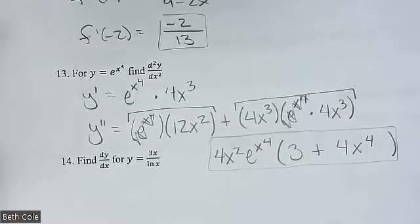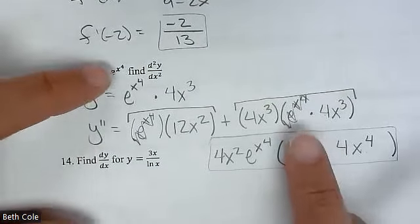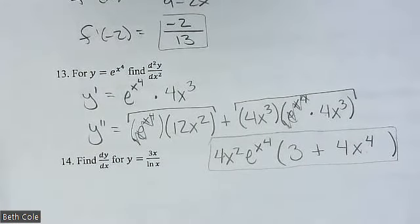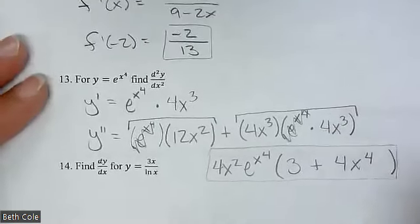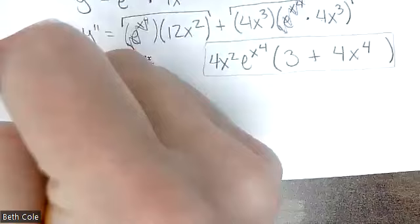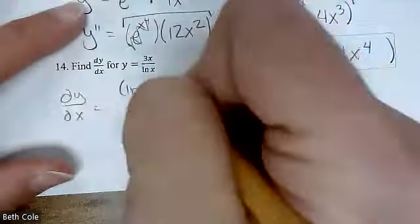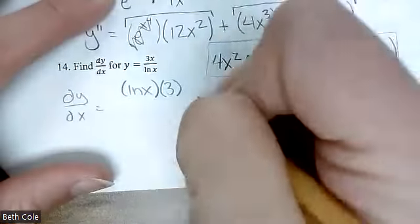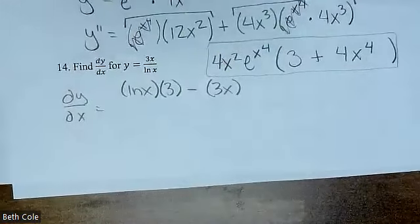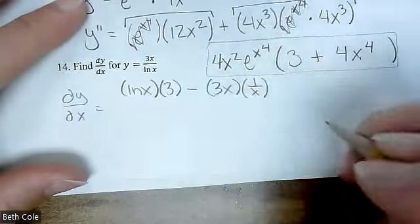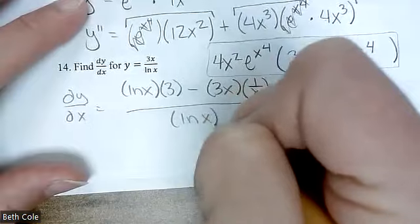I'm going to do this last one and then we'll do our break. It's a chain rule — e is itself, and then you chain on the derivative of x to the fourth, which is 4x cubed. Then we'll do this one and take our break. What rule do you need? Quotient rule. So it is ln of x times the derivative of the numerator, which is 3, minus the numerator times the derivative of the denominator — which would be 1 over x — all over ln of x squared.